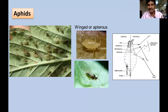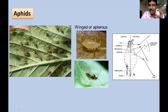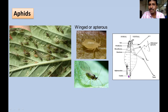Aphids colonize in very large numbers, with groups feeding on the undersurface of leaves as nymphs or adults — adults may be winged or wingless. Aphids have an important structure called cornicles (siphunculi), through which wax is secreted and alarm pheromones are released to alert other individuals of the same species. They also secrete honeydew, which is responsible for ant-mutualism.